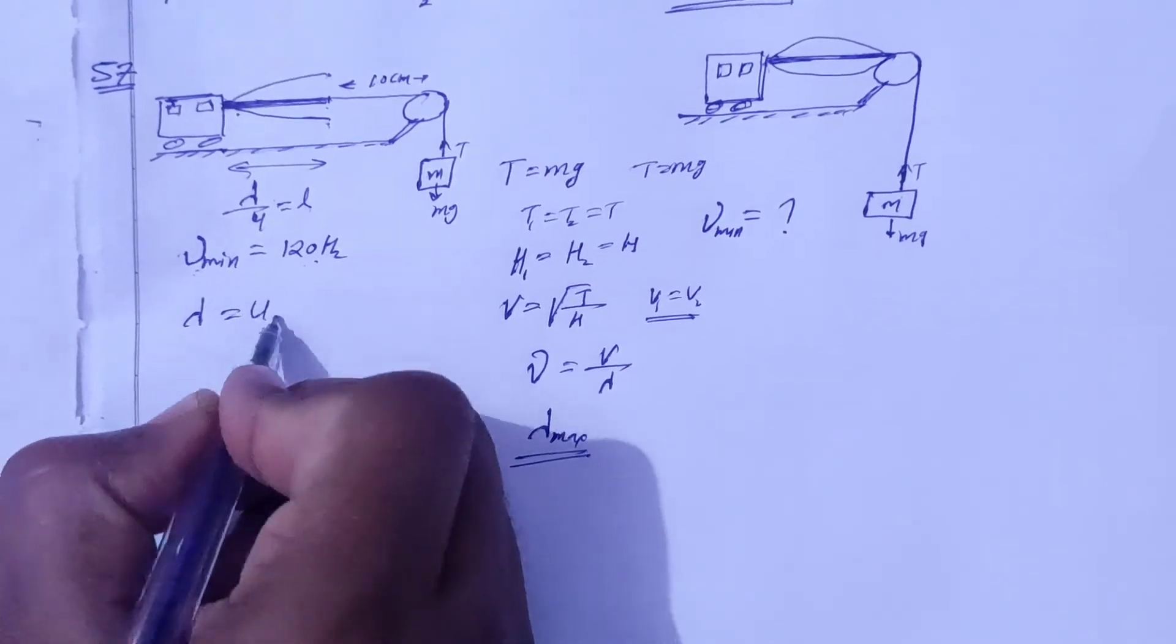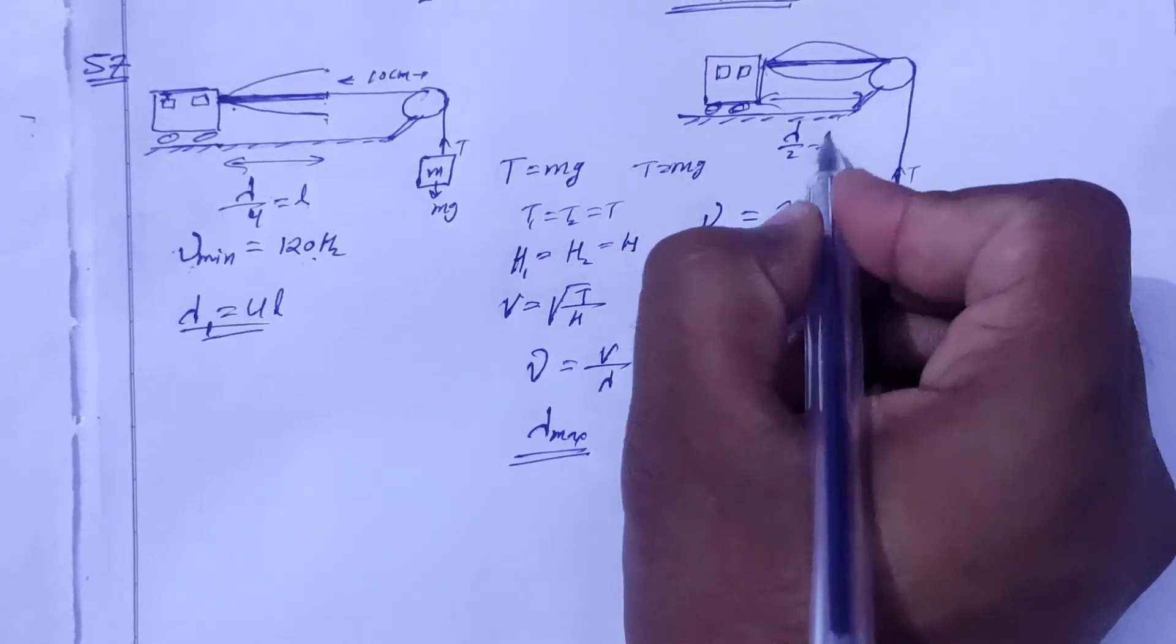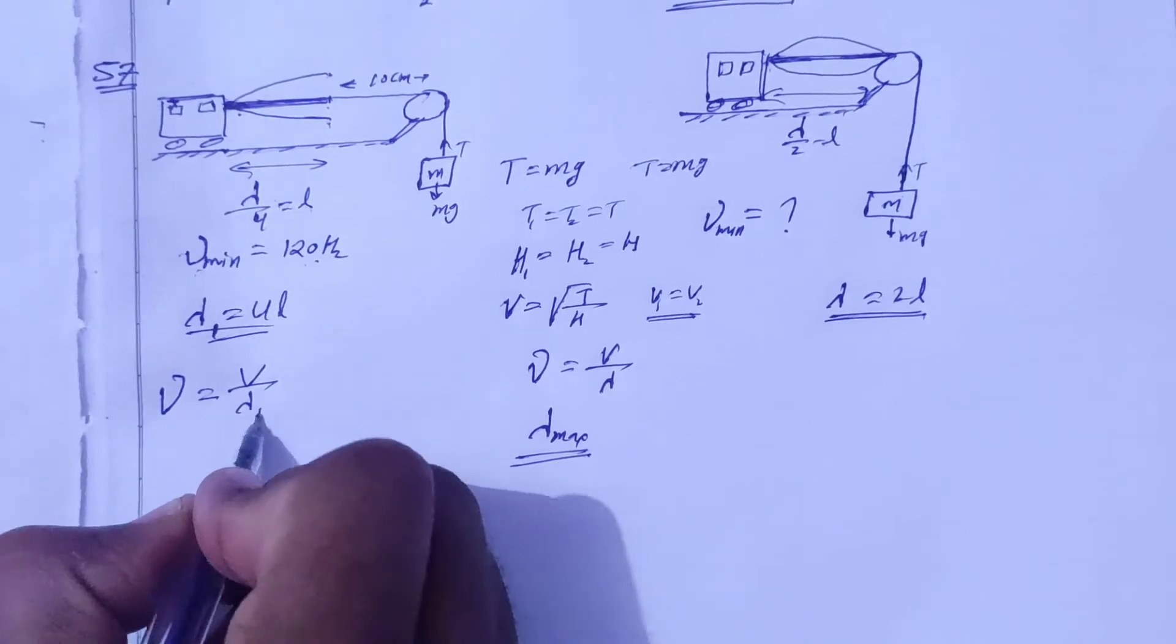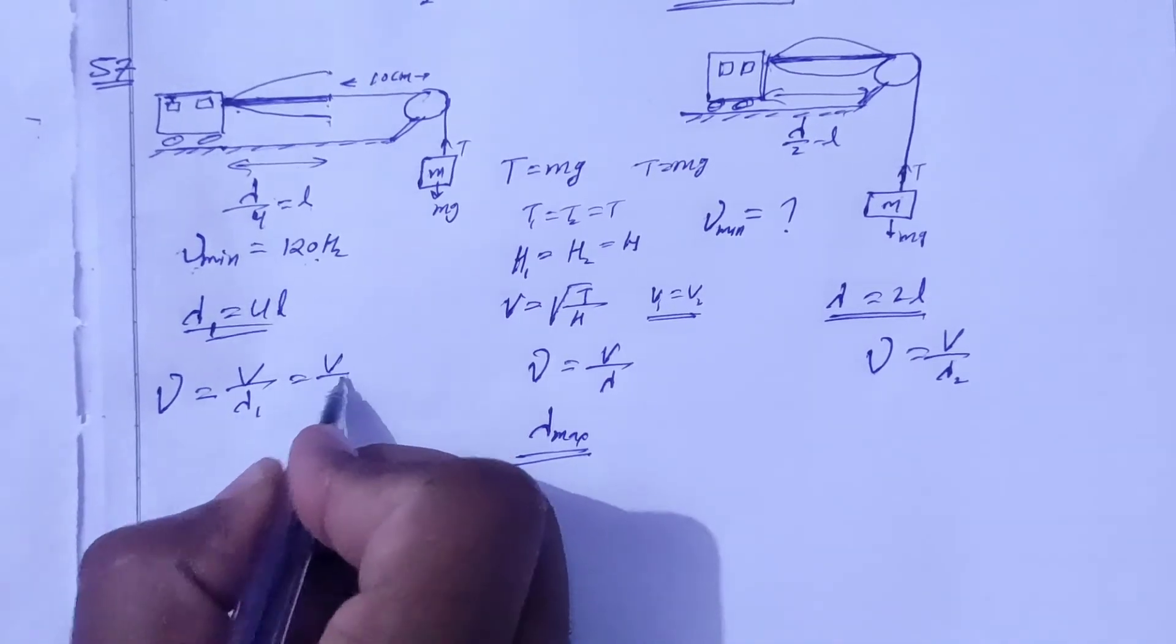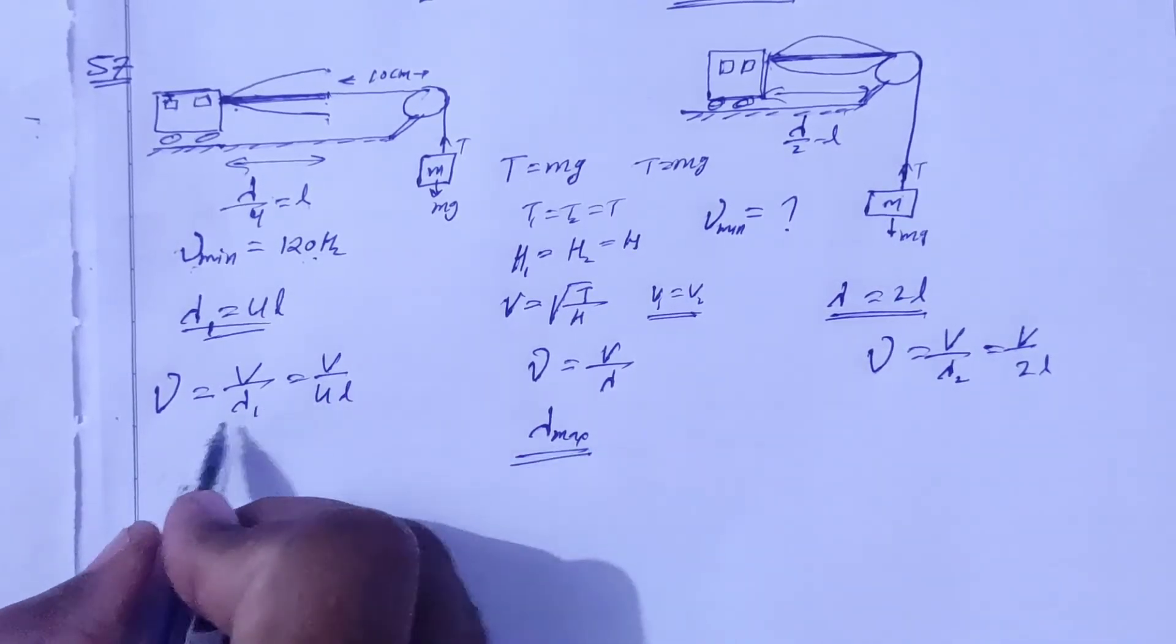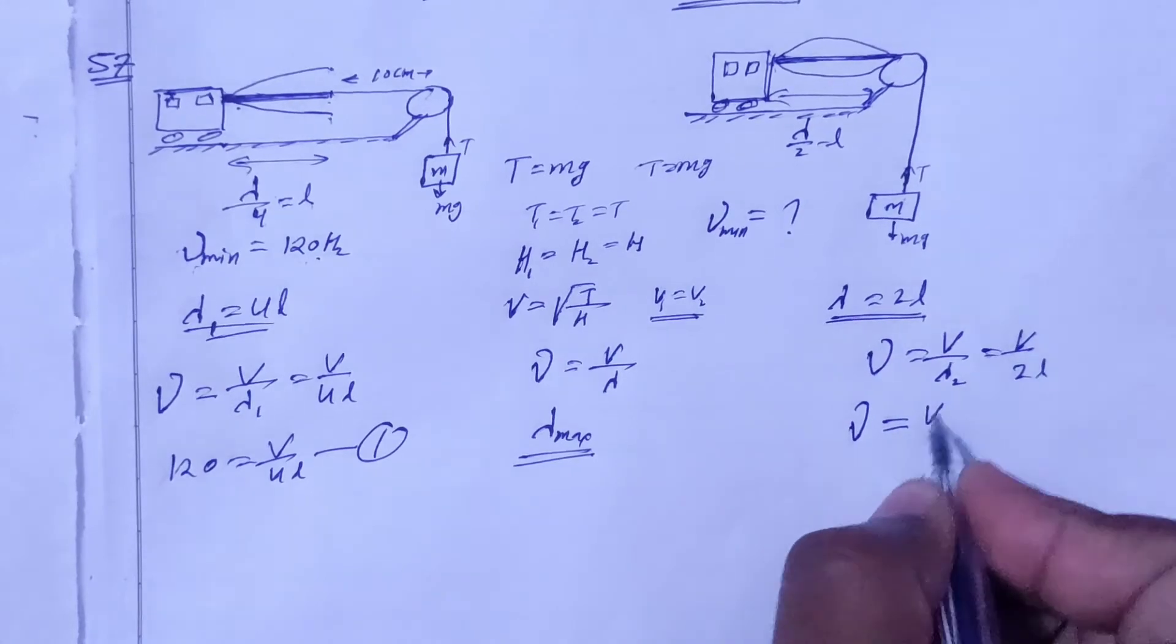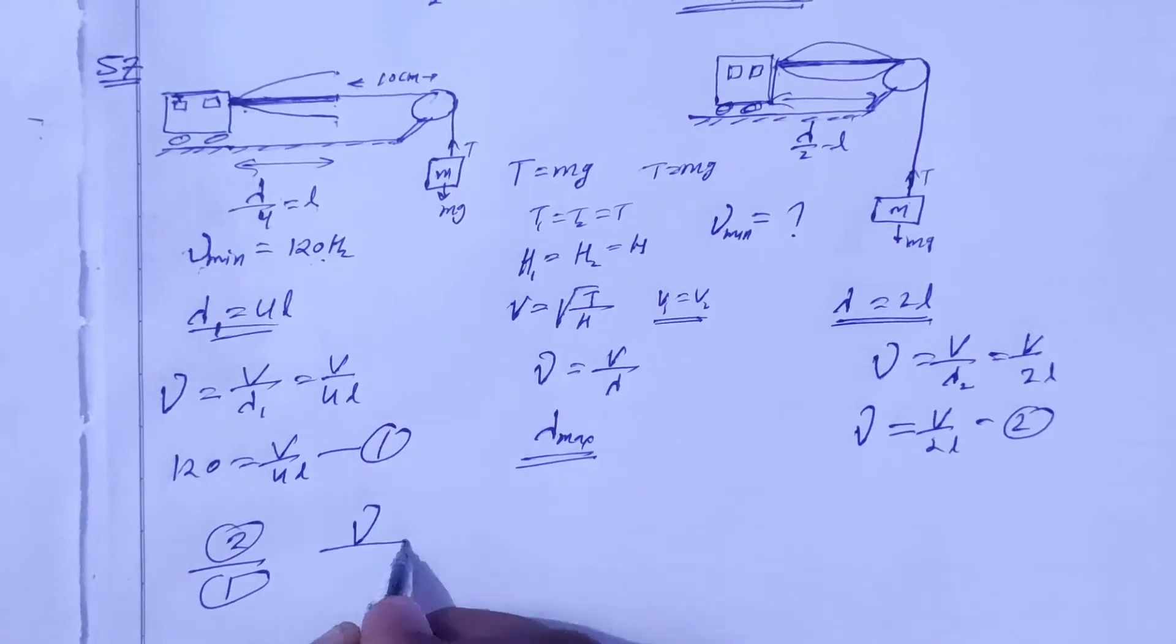So here lambda by 2 is equal to length, so lambda is equal to 2L. Frequency is speed upon lambda 1, and here frequency is speed upon lambda 2. This is V by 4L, and this is V by 2L. This is 120, minimum speed 120 is V by 4L equation 1, and this is frequency to find, V by 2L, equation 2.